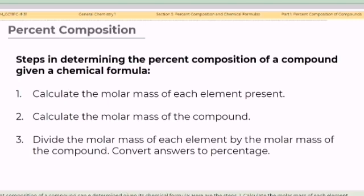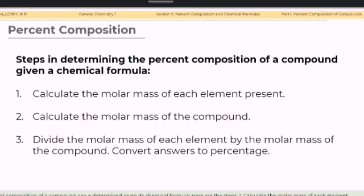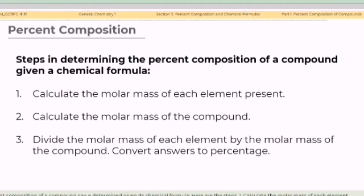Percent composition of a compound can be determined given its chemical formula. Here are the steps to follow. Step one: calculate the molar mass of each element present. Step two: calculate the molar mass of the compound. Step three: divide the molar mass of each element by the molar mass of the compound and convert the answer to percentage.